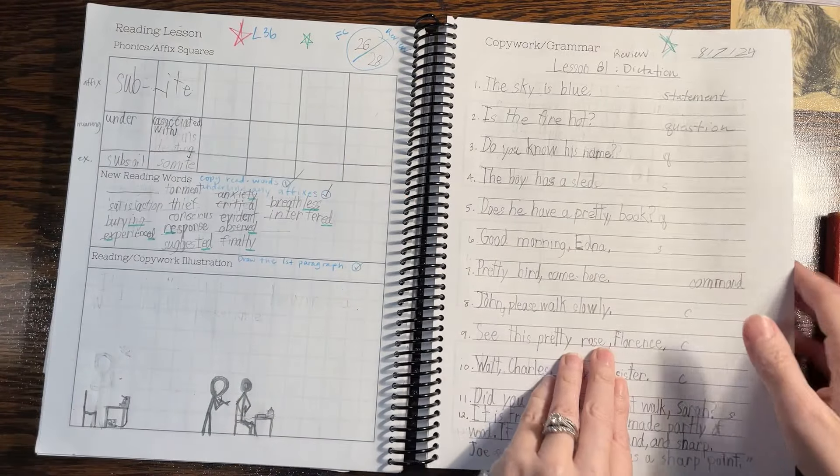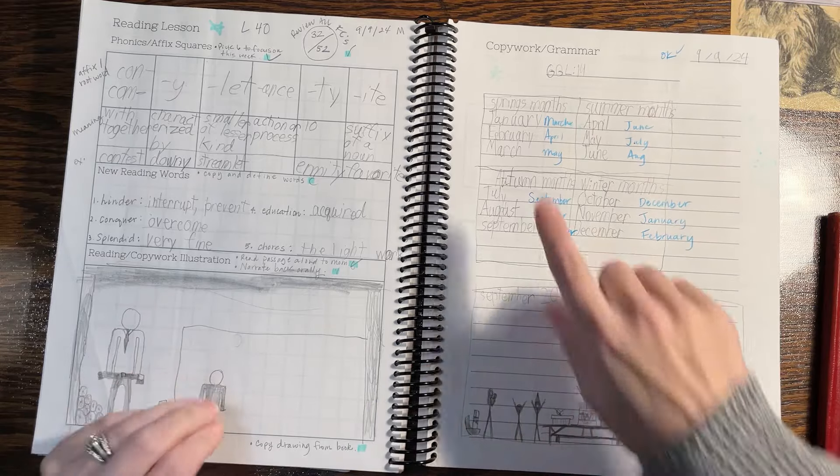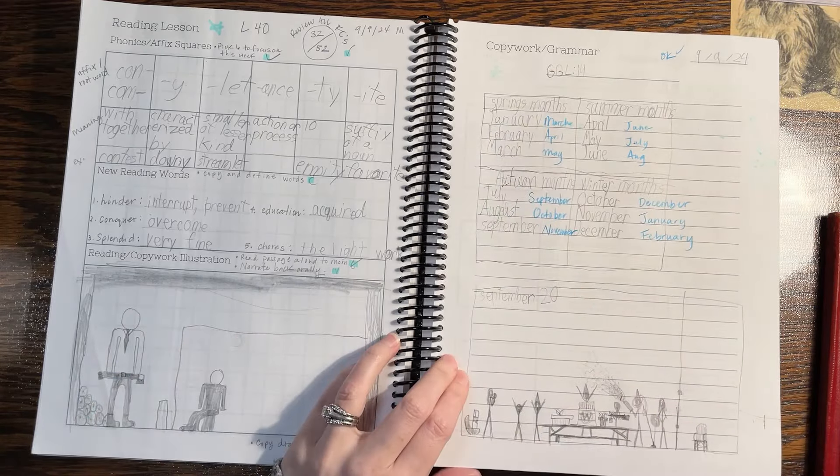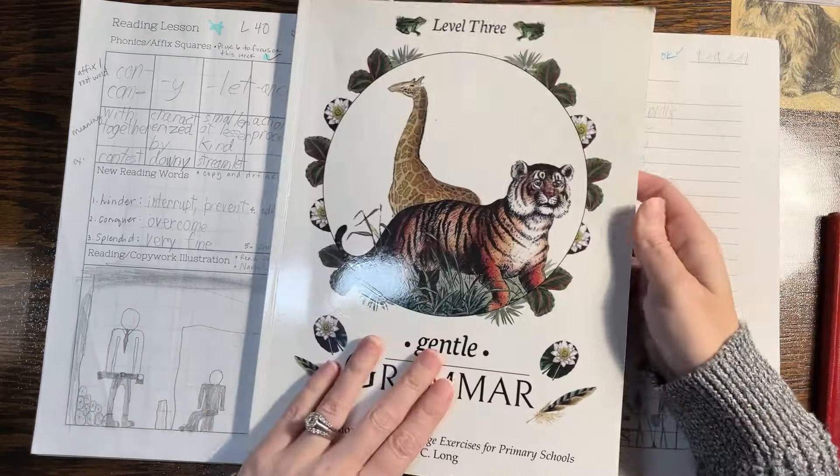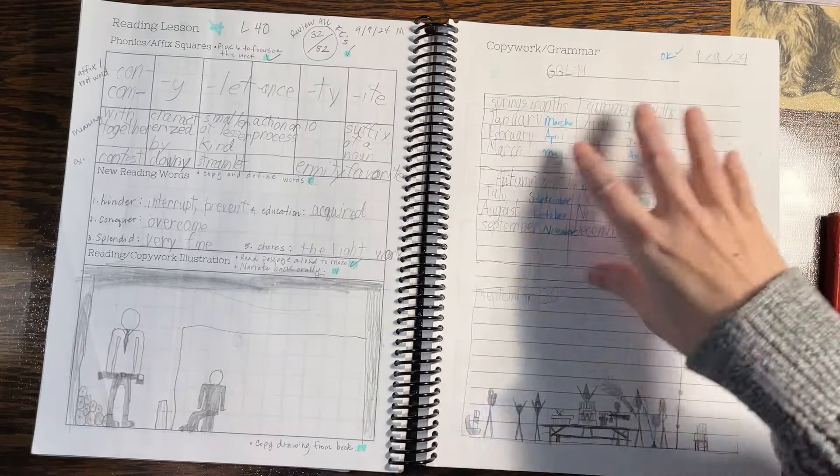So anyways, you can do a lot with that simple page. I also, this was just something I thought might be worth mentioning. If you needed a spelling scope and sequence, if you're like, I kind of want to start with something like phonics or affixes or something, but I don't know that I want to use my McGuffey reader. I'm doing RC.